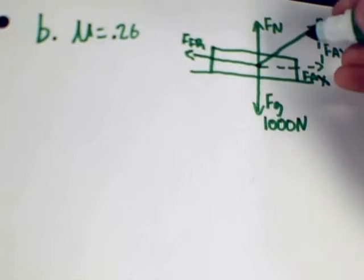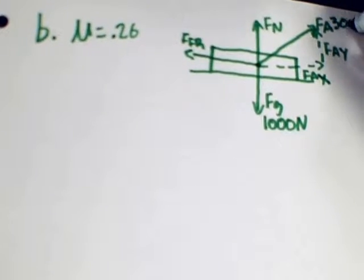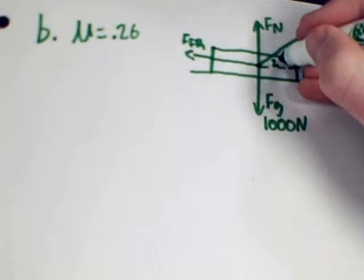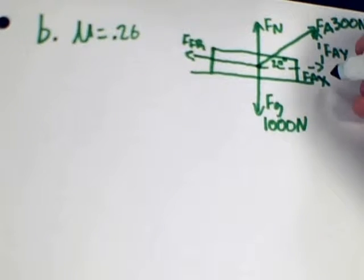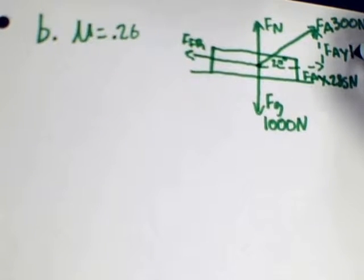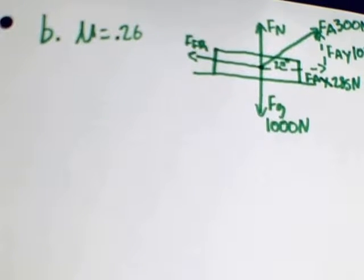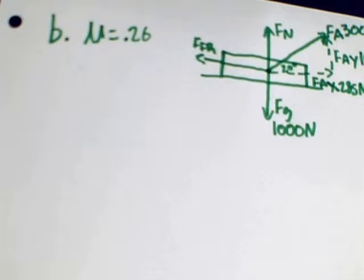As stated previously, the force of gravity is 1000 N and the force applied is 300 N at 20 degrees above the horizontal. We found that the force applied in the x direction is 285 N and the force applied in the y direction is 103 N.